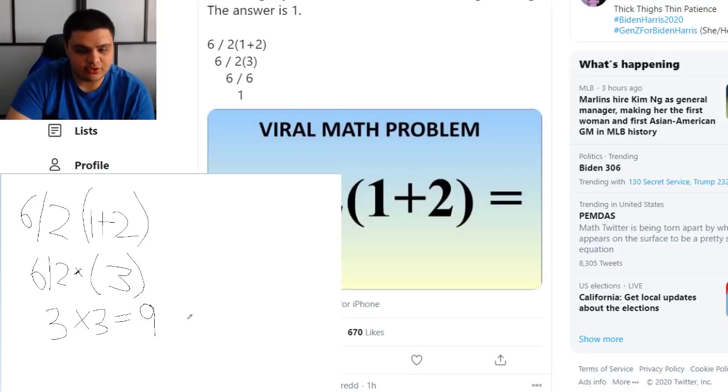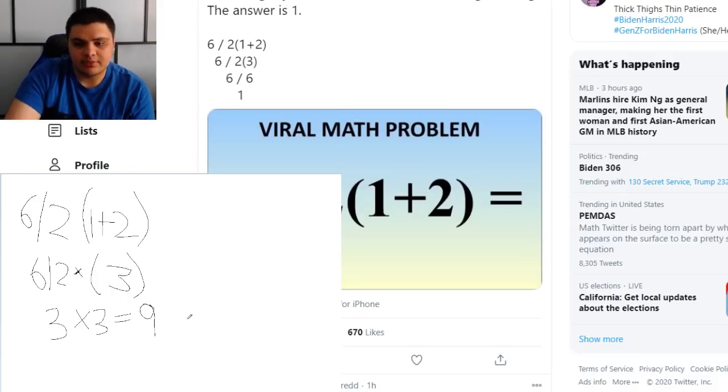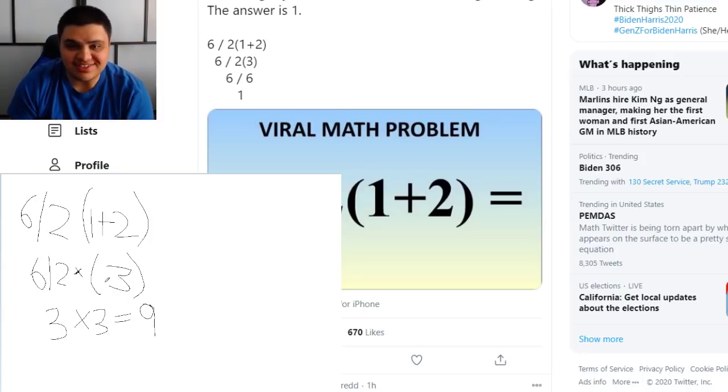Now, if you incorrectly interpret PEMDAS to mean multiplication is prioritized over division, well, what do you come away with? You come away with one because you'll multiply 2 × 3, which is 6, and then divide 6 ÷ 6, which is one. That is wrong. You are dead wrong because there is no prioritization of multiplication over division in PEMDAS.